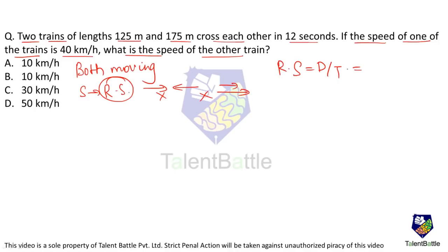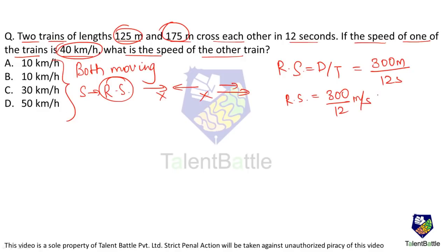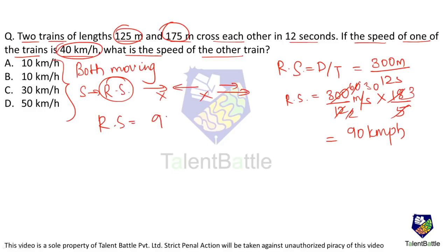The total distance covered is 125 + 175 = 300 meters, and the time taken is 12 seconds. So the relative speed = 300/12 = 25 m/s. Converting to km/h by multiplying by 18/5 gives 90 km/h. If they are moving in opposite directions, the speeds add: 40 + x = 90, so x = 50 km/h, which is option D.